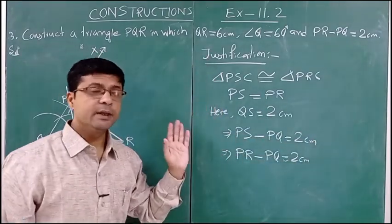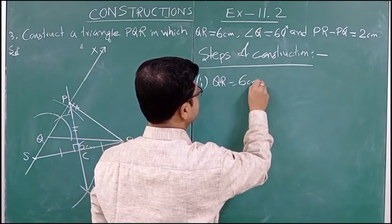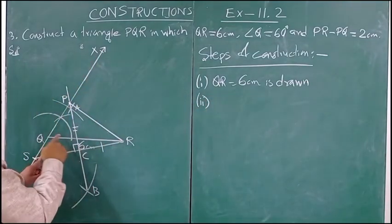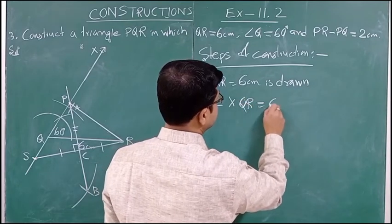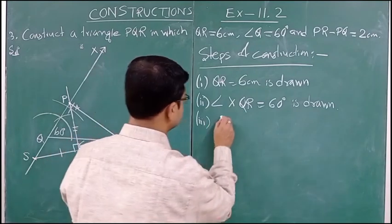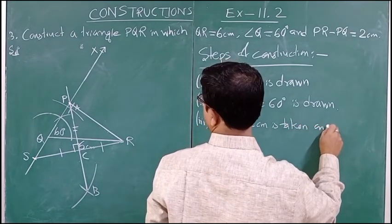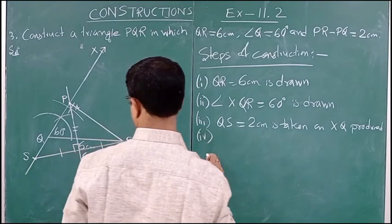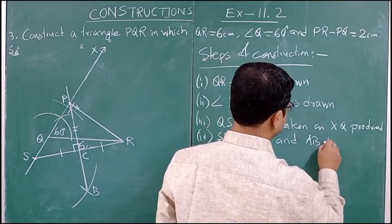Now the steps of construction: Step 1 — QR equal to 6 centimeter is drawn. Step 2 — angle XQR equal to 60 degree is drawn. Step 3 — QS equal to 2 centimeter is taken on QX produced downward. Step 4 — SR is joined, and AB, the perpendicular bisector of SR, is drawn.